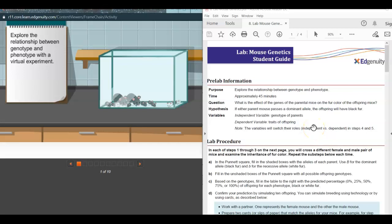Hi everyone, I just want to go over how to do the lab for mouse genetics. On the left side of the screen, I have my Edgenuity lab open, and it's going to tell us what we're going to do in an experiment. On the right side, I have my student guide for this lab.